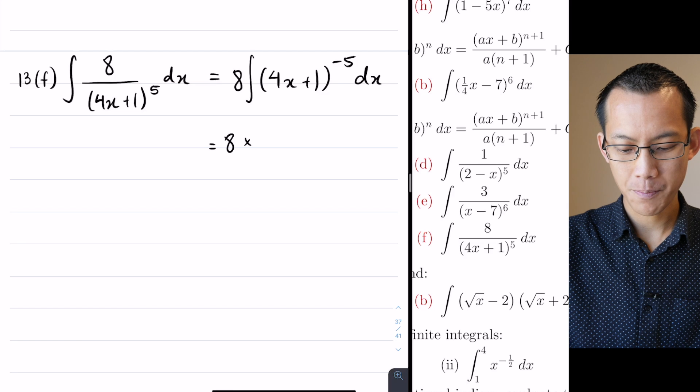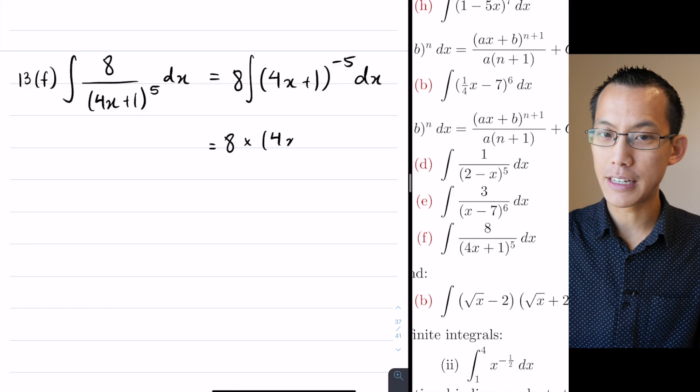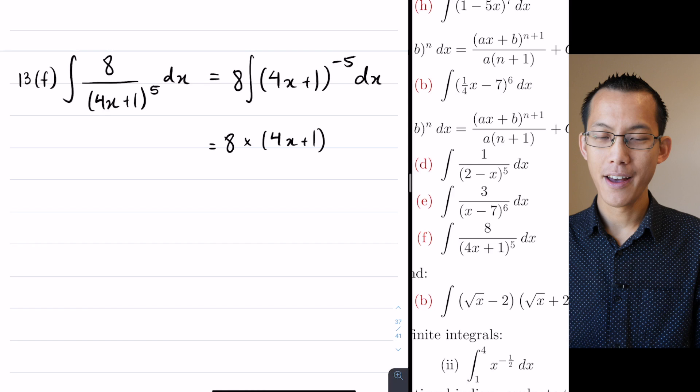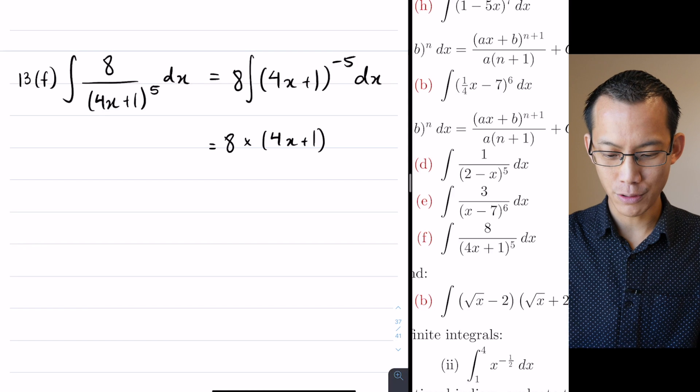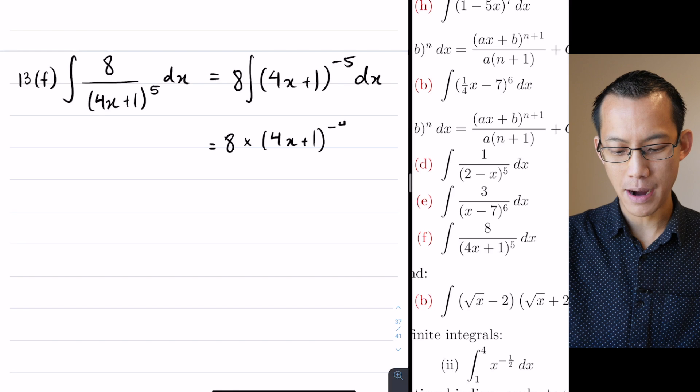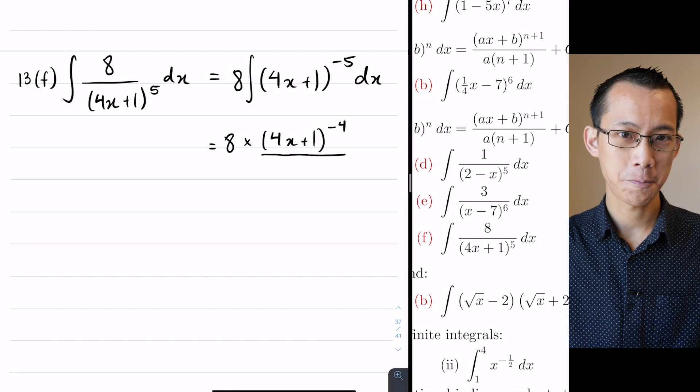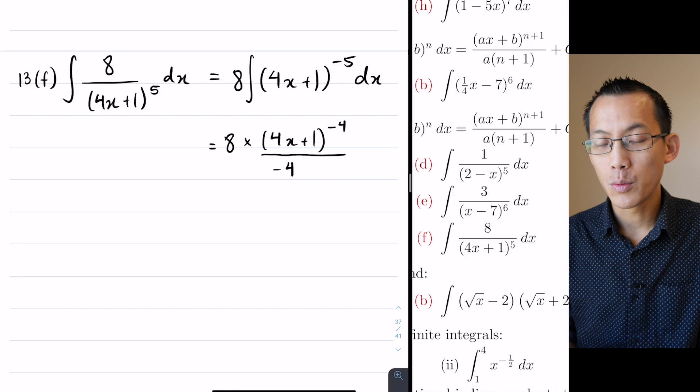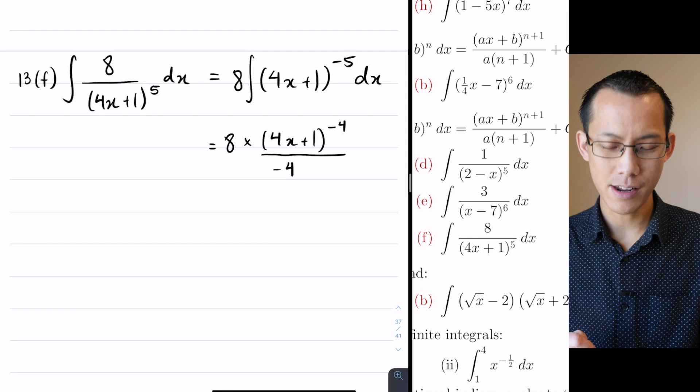Okay, let's have a look here. I've got 4x + 1, and first I'm going to deal with the outside. So something to the power of -5, I will increase the integral which gives me -4, and then I'm going to divide by that new index. So now I've dealt with the outside.